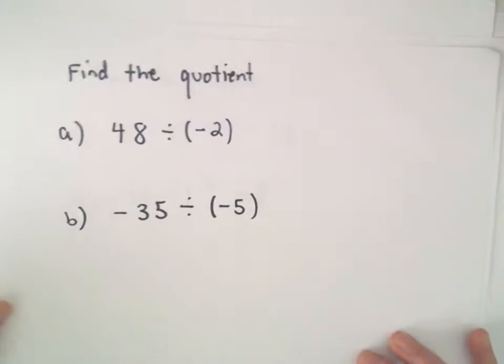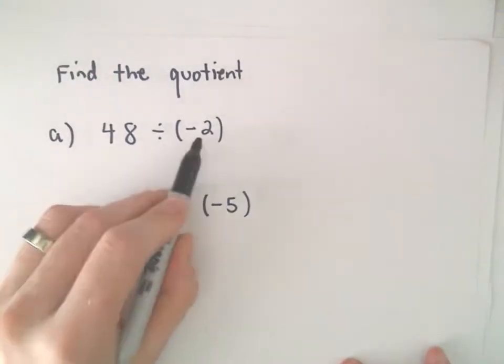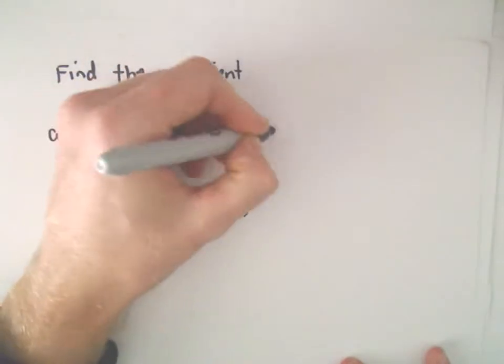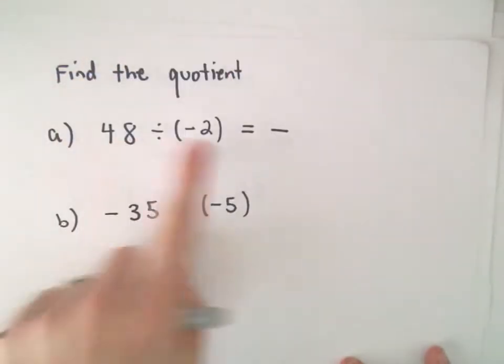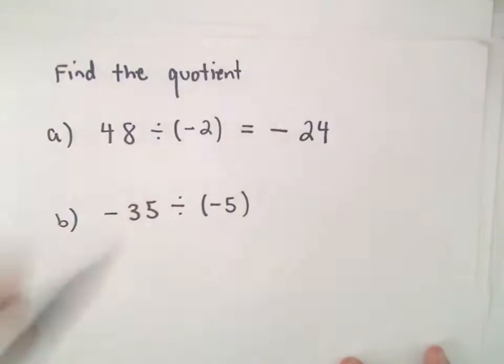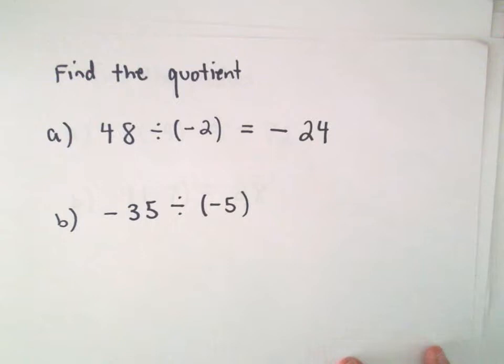Exact same rules with division. Okay, so we've got 48 divided by negative 2. We have a positive divided by a negative. That's going to give us a negative. And then 48 divided by 2 is going to give us 24. So, 48 divided by negative 2 is going to give us negative 24.